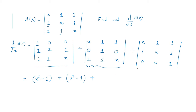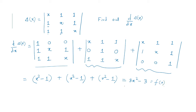If we find out the determinant of the second and third matrix expressions, each value would also be x²−1. So the total value of d/dx of delta(x) would be 3(x²−1), which equals 3x²−3. This is the derivative of the determinant, and you can see it is a function of x.